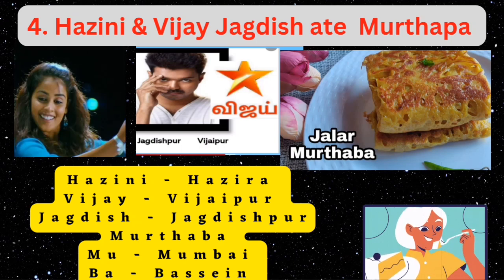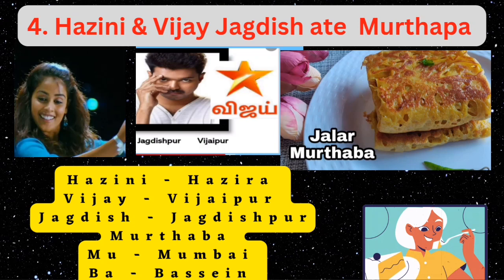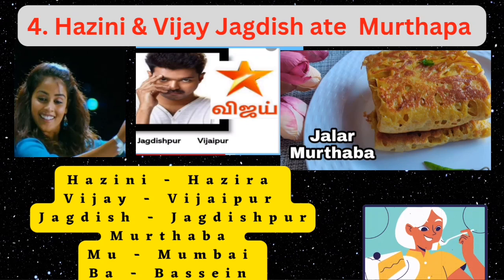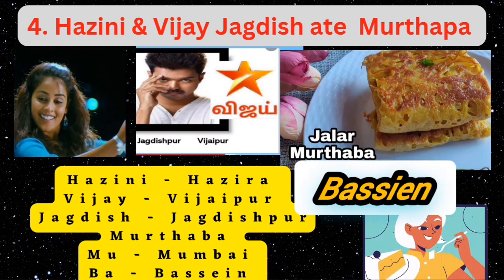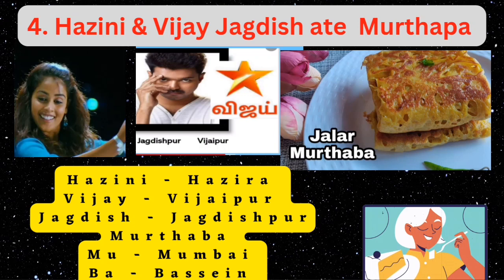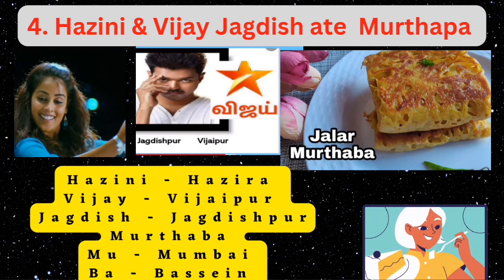The next shortcut uses actor Vijay's movie 'Tupaki,' telecast on Vijay TV, where his character is Jagadish, and the heroine is Hasini. 'Hasini' refers to Hazira, 'Vijay' to Vijaypur, 'Jagadish' to Jagdishpur, 'mu' to Mumbai High, and 'ba' to Basin. So the Hazira–Vijaypur–Jagdishpur pipeline links Mumbai High and Basin.